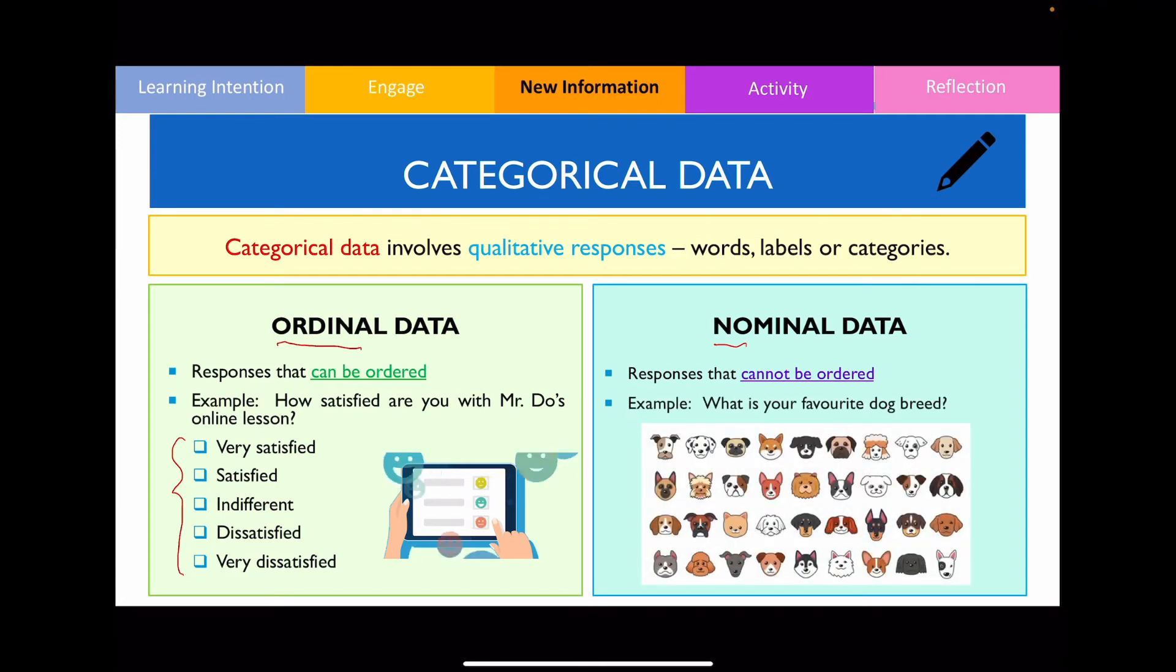An example of this is asking what is your favorite dog breed. In this particular example, there's no way for me to put one response above or below another response because there's no hierarchy whatsoever. So as a result of that, this is an example of nominal data.